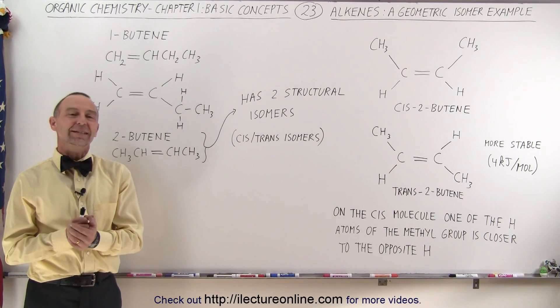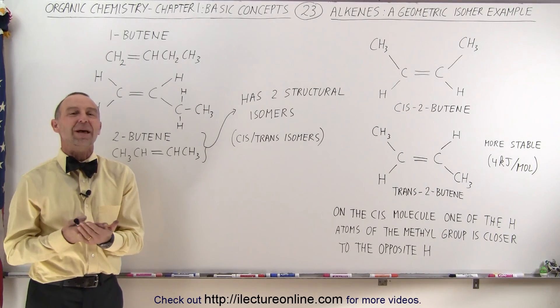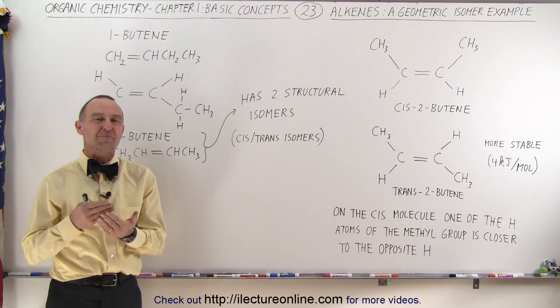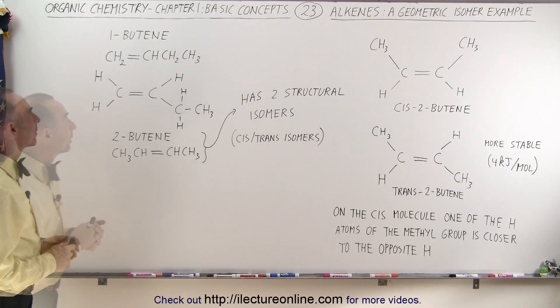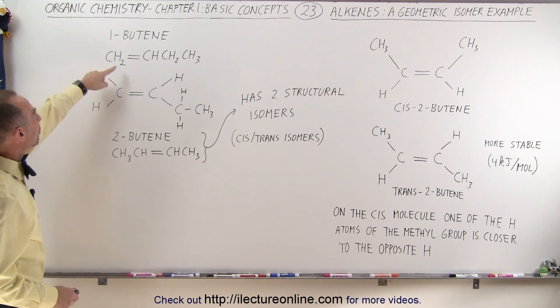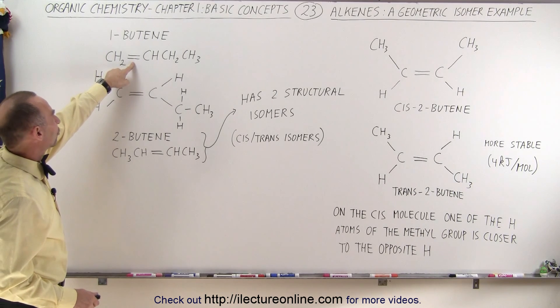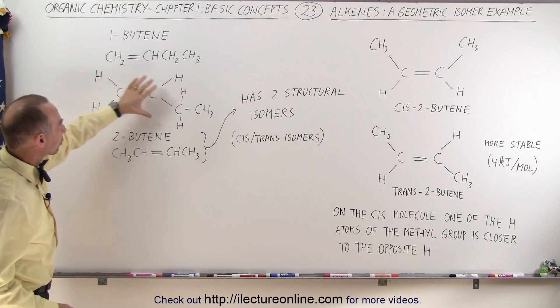Welcome to ElectronLine. Now let's look at some good examples of what we call geometric isomers. Starting with one-butene, we have the double bond as the first bond in the chain, and this is what the molecule looks like.